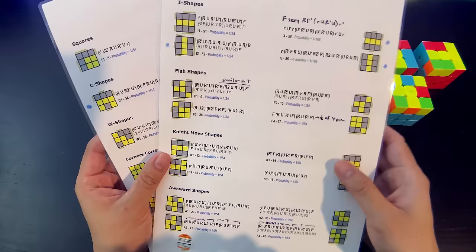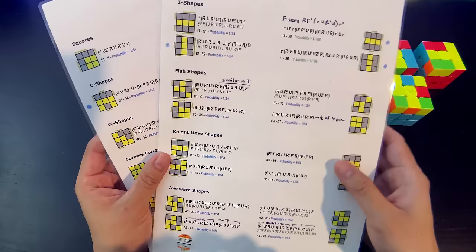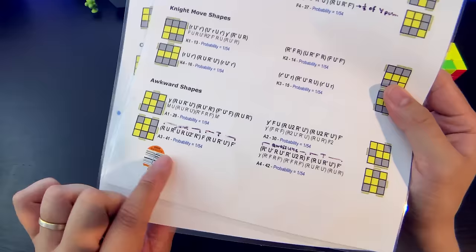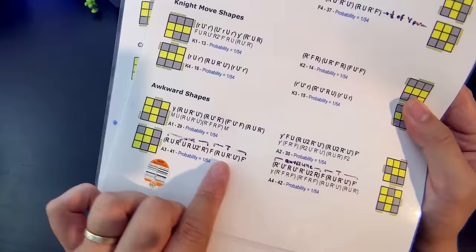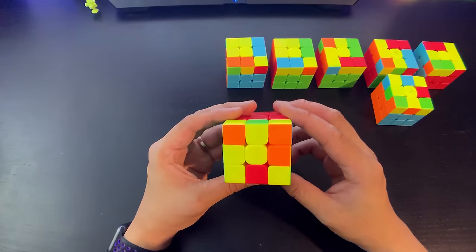As you can see, I started to make some notes on cases with recognizable parts inside of them. For example, I noticed that for a couple of the awkward shapes, I've actually no idea why they're called that, but for these two awkward shapes, it actually starts with the sune and then the T OLL, and this one was the anti-sune and the T OLL. That was a really easy but fun thing to recognize.